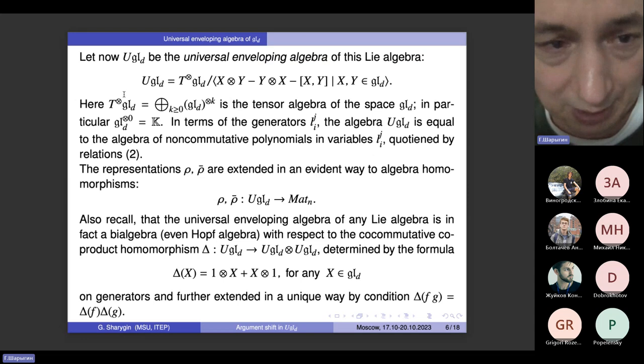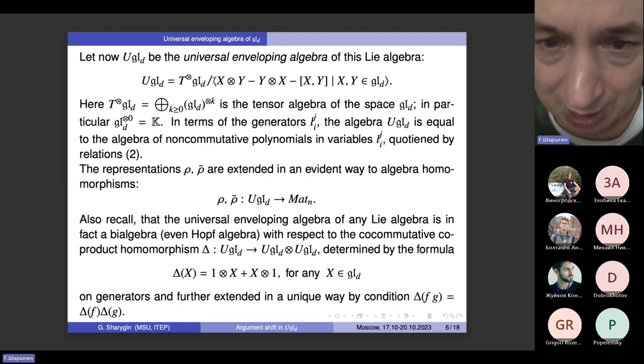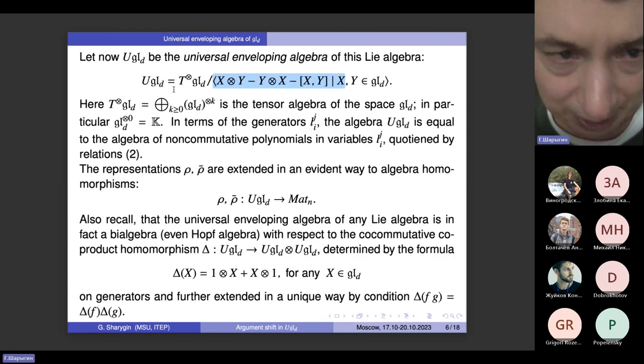For us, it is important that we can actually go from Lie algebra GLD to the universal enveloping algebra GLD, just by taking the same generators L_ij, and now just giving it, letting them generate not a Lie algebra, but letting them generate a free associative algebra, and then quotienting out the relation, the relation two. That gives you the universal enveloping algebra of GLD.